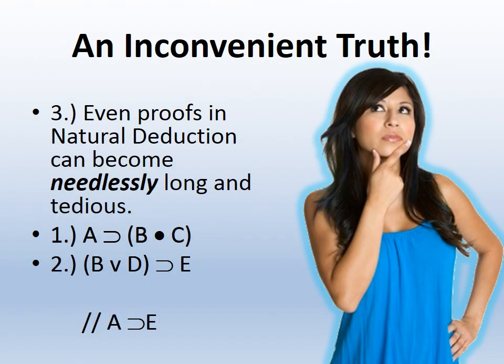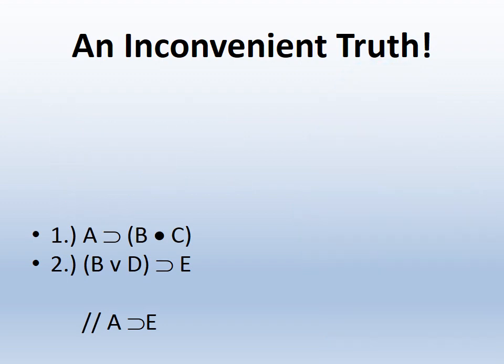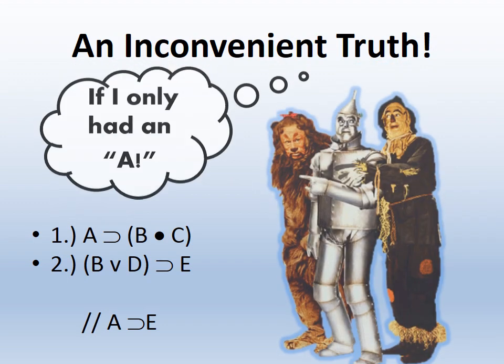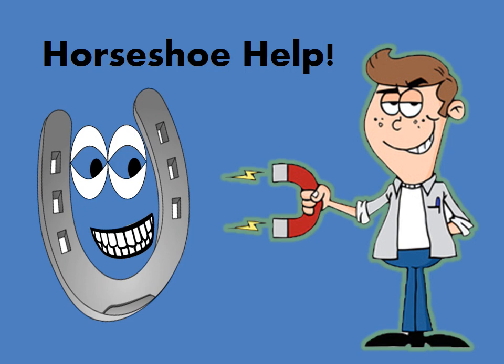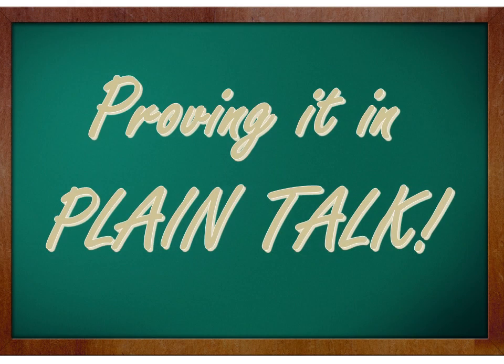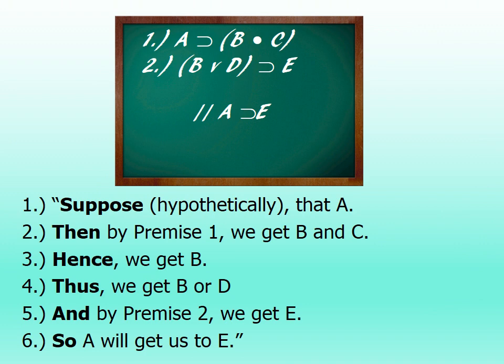These proofs can become needlessly long and tedious. The reasoning from premises one and two to the conclusion is pretty simple. What we need to think to ourselves is: wouldn't it have been convenient if just for a minute we'd had an A? We need a little horseshoe help here, and I'm going to show you with conditional proof how conditional proofs offer us the help with horseshoes that we really need. In plain talk, we would never have walked through a proof like that — it's just too complicated. We would just use common sense.